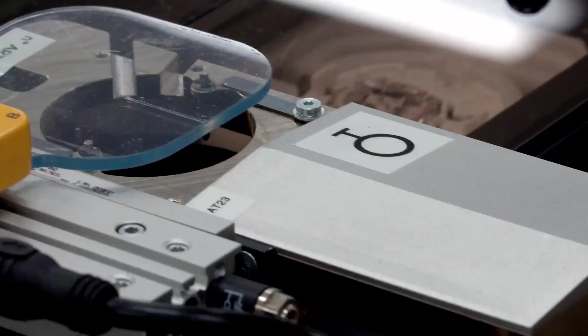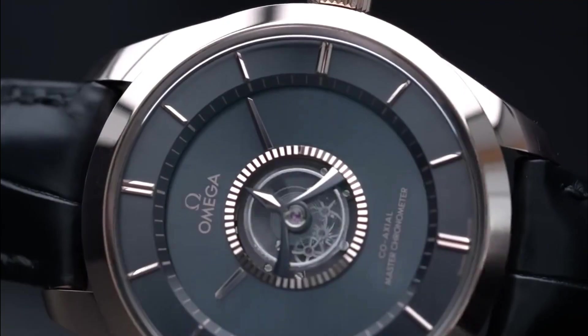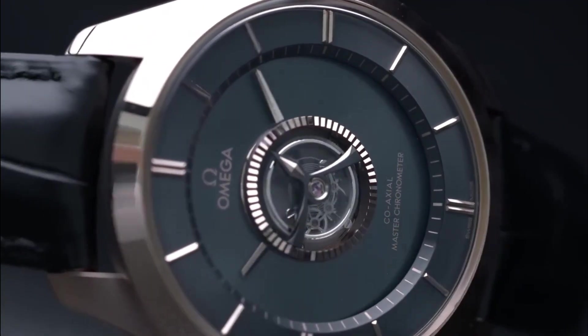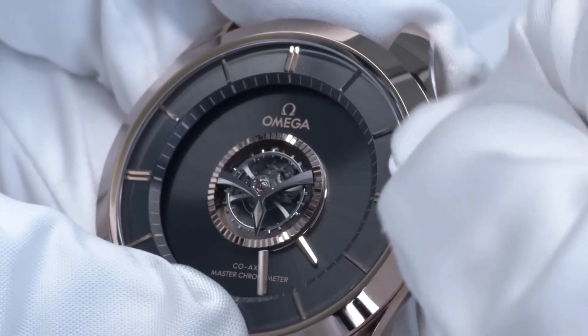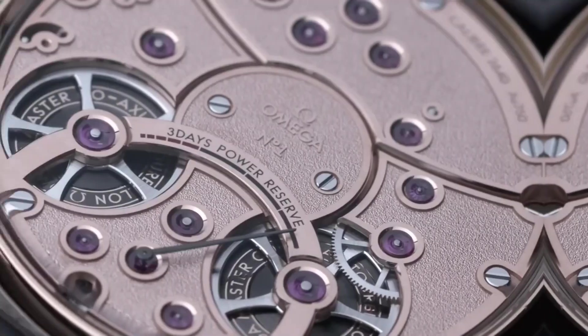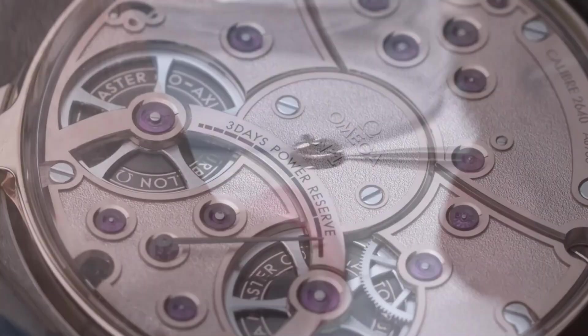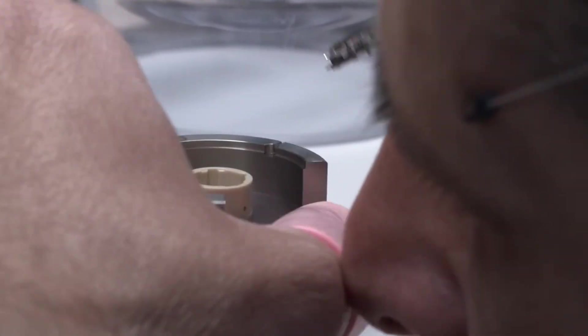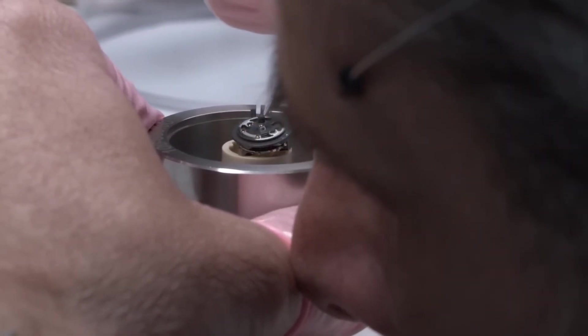With the heartbeat now secured, attention turns outward to beauty and identity. Because if the movement is the soul, the dial is the face, the first thing the world sees when an Omega watch slips from its box. Here, engineering meets artistry with breathtaking precision. Enamel dials are fired in blazing kilns, layer by layer, until their colors radiate with depth.